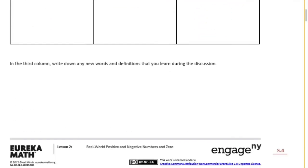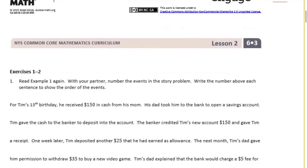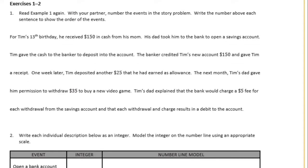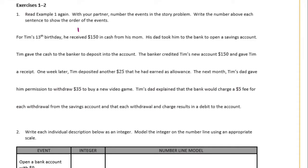But that's not something we're going to do together. So exercise one through two says read example one again, number the events in the story problem, write the number above each sentence to show the order of events. This is kind of like language arts. We're just going to go through and read it and every time there is a sentence basically we're going to show the order of events and how many events there were. So let's start. For Tim's 13th birthday he received $150 in cash from his mom. So first event he receives $150 from his mom.